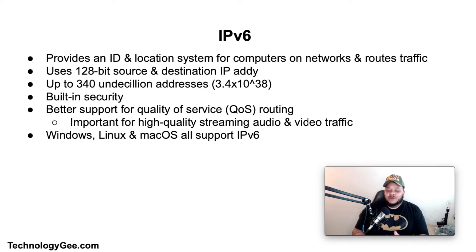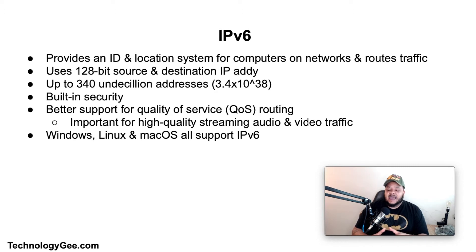First things first, let's talk about IP version 6. Internet Protocol version 6 is the most recent version of the internet protocol — the communications protocol that provides an identification and location system for computers on networks and routes traffic across the internet. IP version 6 uses 128-bit source and destination IP addresses, compared to 32-bit for IP version 4, theoretically enabling up to 340 undecillion addresses, or 3.4 times 10 to the 38th power. IP version 6 also features built-in security and provides better support for quality of service routing, which is important for high-quality streaming audio and video.